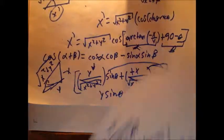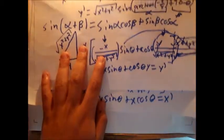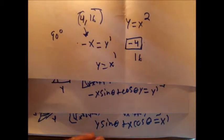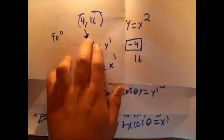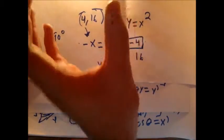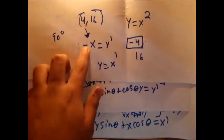We originally found that y prime equals negative x sine theta plus y cosine theta, and x prime equals y sine theta plus x cosine theta. Now let's take a function we're familiar with. We've considered y equals x squared. We'll test the point (4, 16) — since 4 squared equals 16. We're going to revolve it 90 degrees. Sine of 90 is 1 and cosine of 90 is 0, so the formula gives: y prime equals negative x times 1 plus y times 0, which is negative x. And x prime equals y times 1 plus x times 0, which equals y.